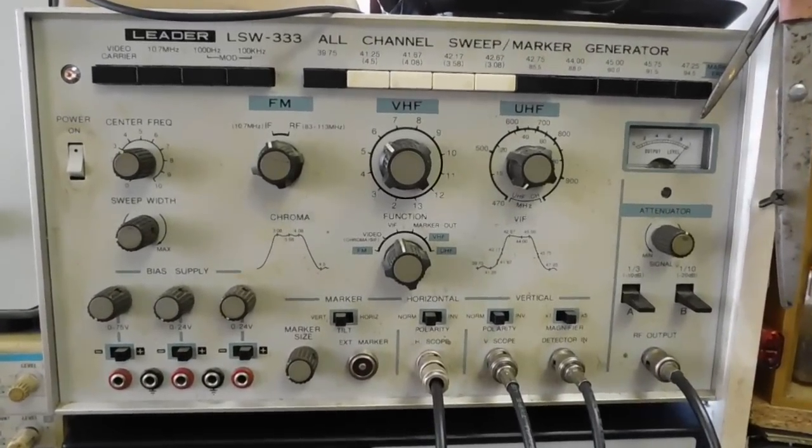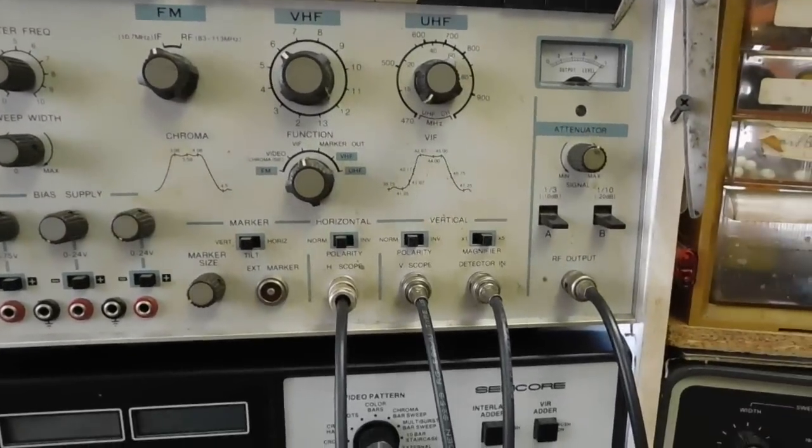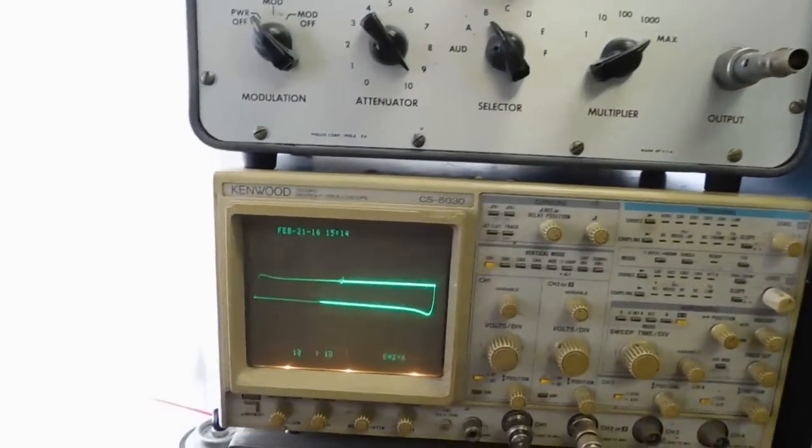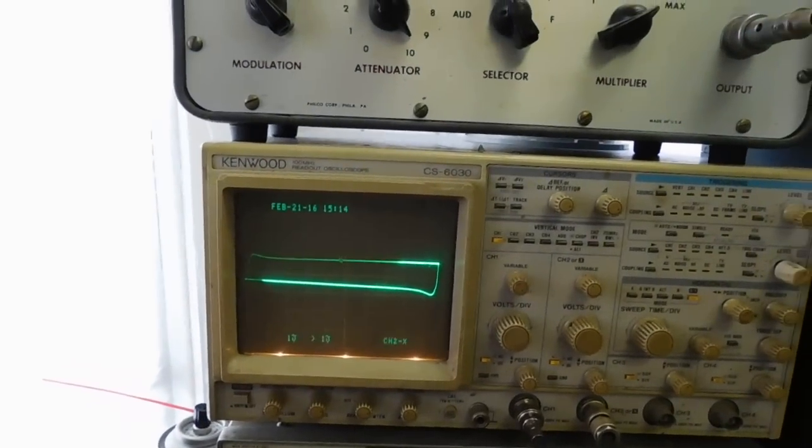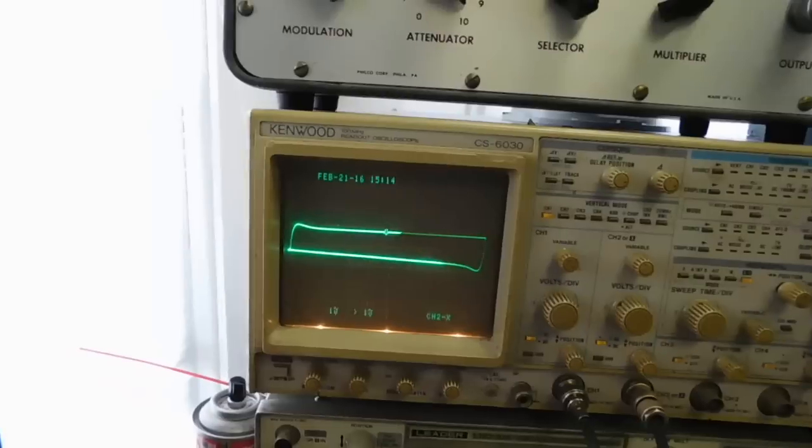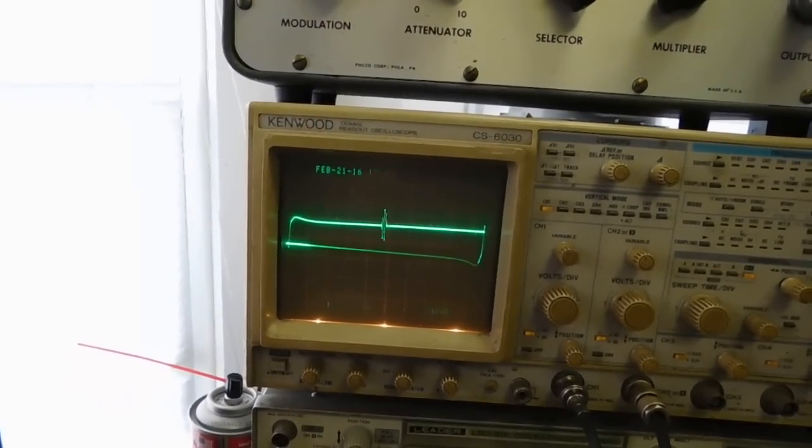So I basically just got the thing hooked up feeding the output back into the detector input and then showing it up on the scope here and showing the marker in there at 44. I can increase the size of it and then back down.